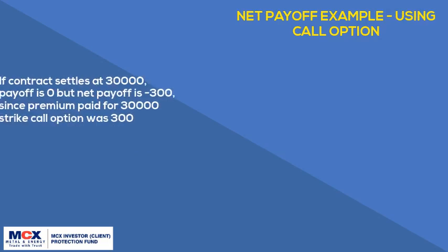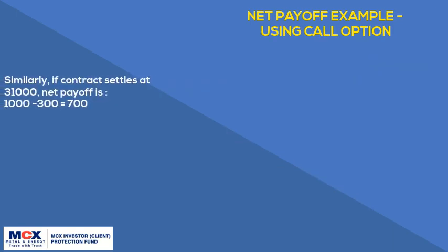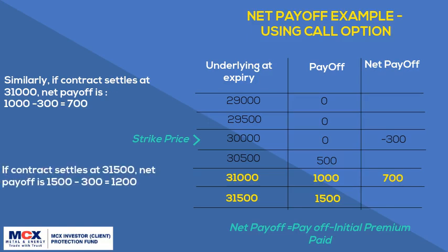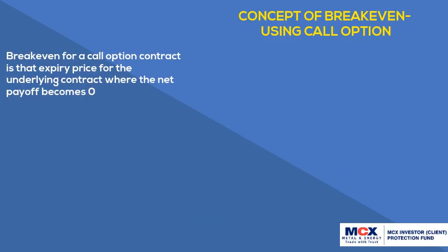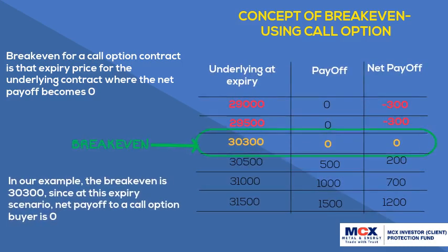Continuing with the previous example: if the contract settles at 30,000, payoff is 0 but net payoff is negative 300, since the premium paid for the 30,000 strike call option was 300. Similarly, if the contract settles at 31,000, net payoff is 1,000 minus 300, which is 700. If the contract settles at 31,500, net payoff is 1,500 minus 300, which is 1,200. The break-even for a call option contract is the expiry price at which the net payoff becomes 0. In our example, the break-even is 30,300, since at this expiry scenario the net payoff to a call option buyer is 0.